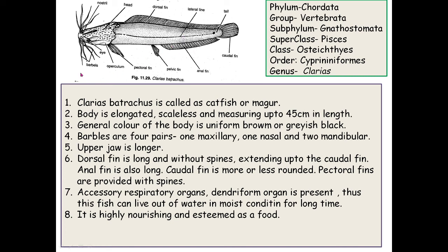The body of Clarias batrachus has no scales and bears four pairs of barbels — one maxillary, one nasal, and two mandibular. The pectoral fins have spines. It is commonly called catfish or mangur. The body is elongated, measuring up to 45 cm in length, and general body color is uniform brown, grayish black, or dark black.